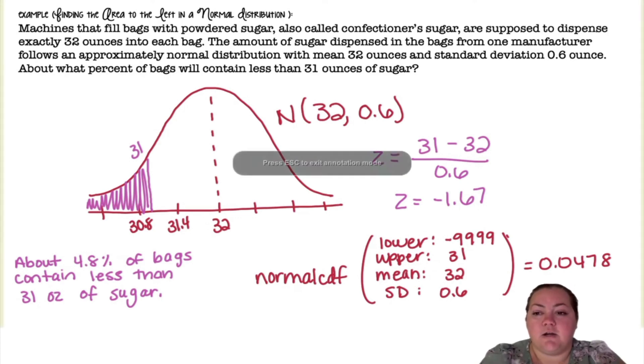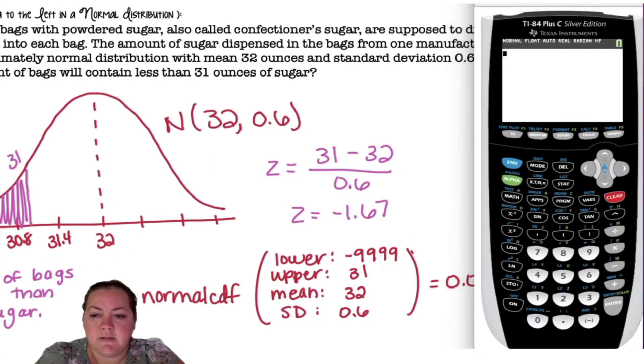Let me show you what this looks like in the calculator. We're going to go to second vars, which is our distribution menu, and we're going to go to normal CDF. It's going to ask for lower bound, upper bound, mean, standard deviation. I'm going to go ahead and put negative 999. My upper bound is 31. My mean is 32 and my standard deviation is 0.6. Paste, enter, and we get our answer 0.0478.